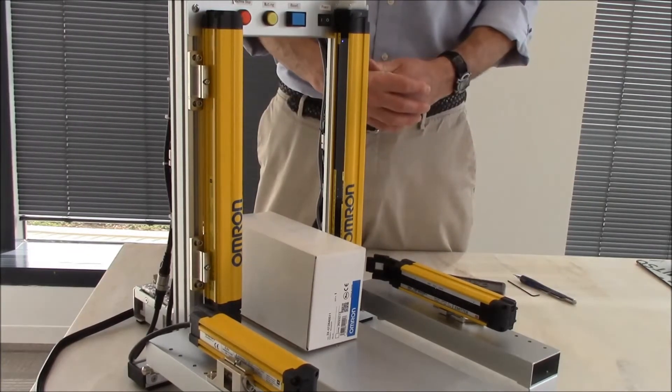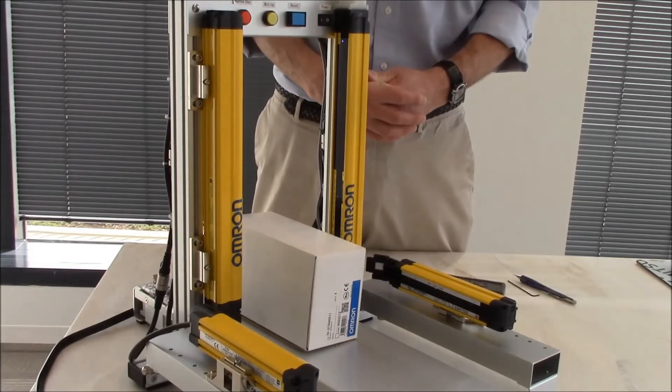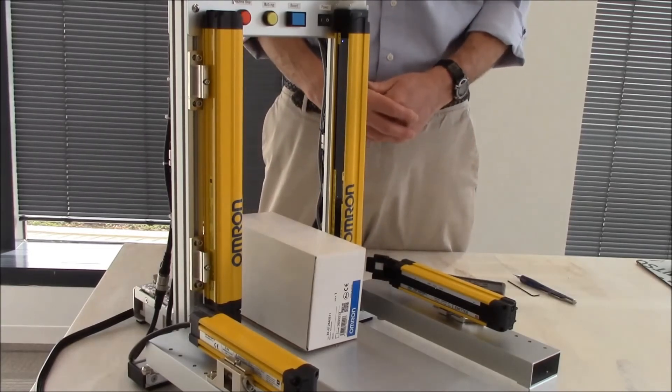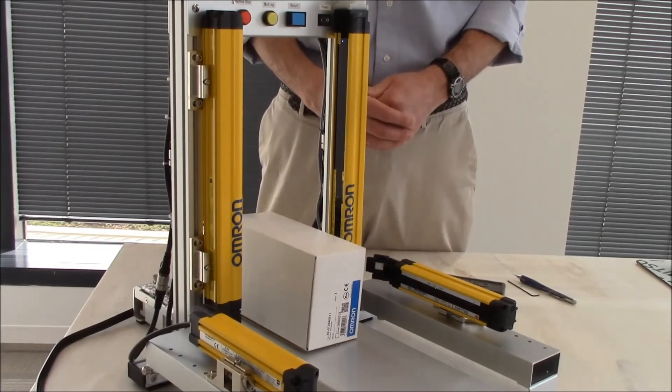This ends the demonstration on how to set up the F3SG safety light curtain using the fixed blanking option. Thank you very much and have a great day.